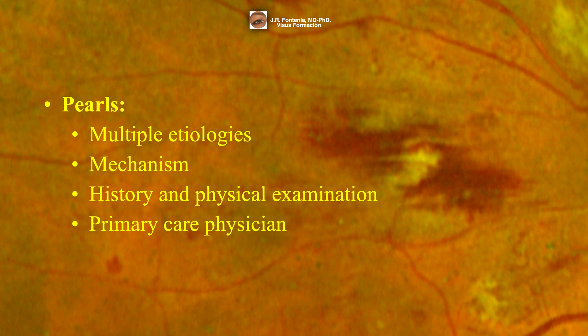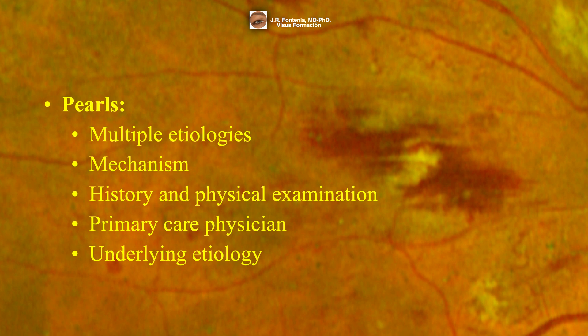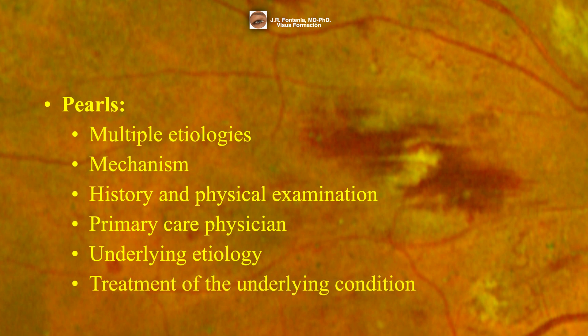If Roth spots are found on routine ophthalmological examination, referral to a primary care physician for evaluation and workup of systemic disease is suggested. Identification of the underlying etiology is important so that management can be guided to prevent any systemic or ocular complications. Roth spots are usually asymptomatic, do not require ophthalmologic treatment, and resolve with treatment of the underlying condition.